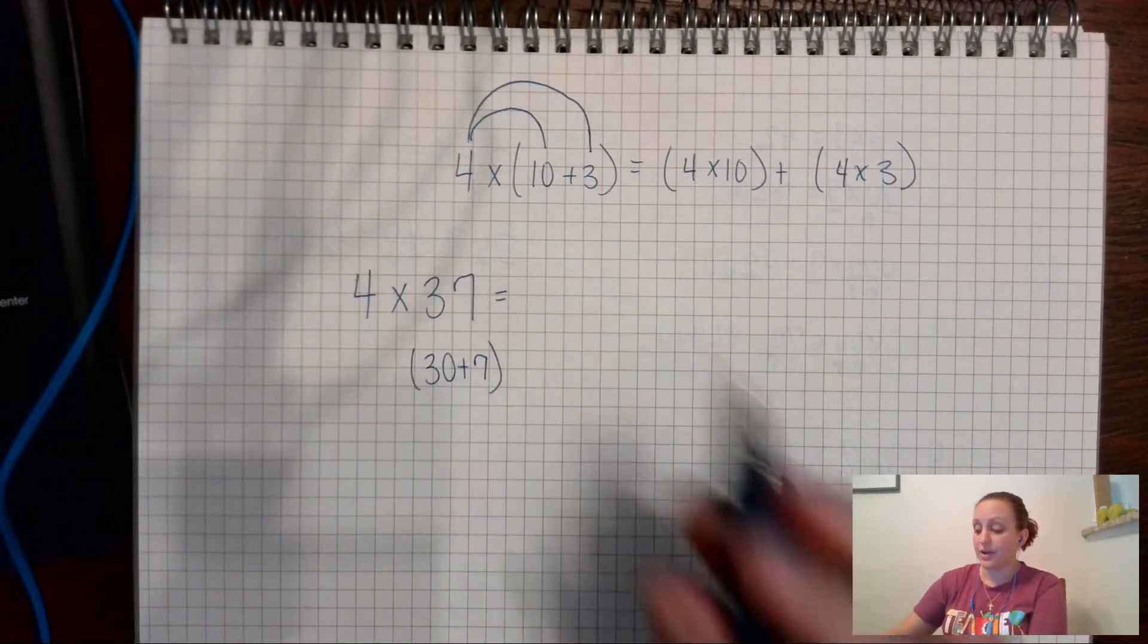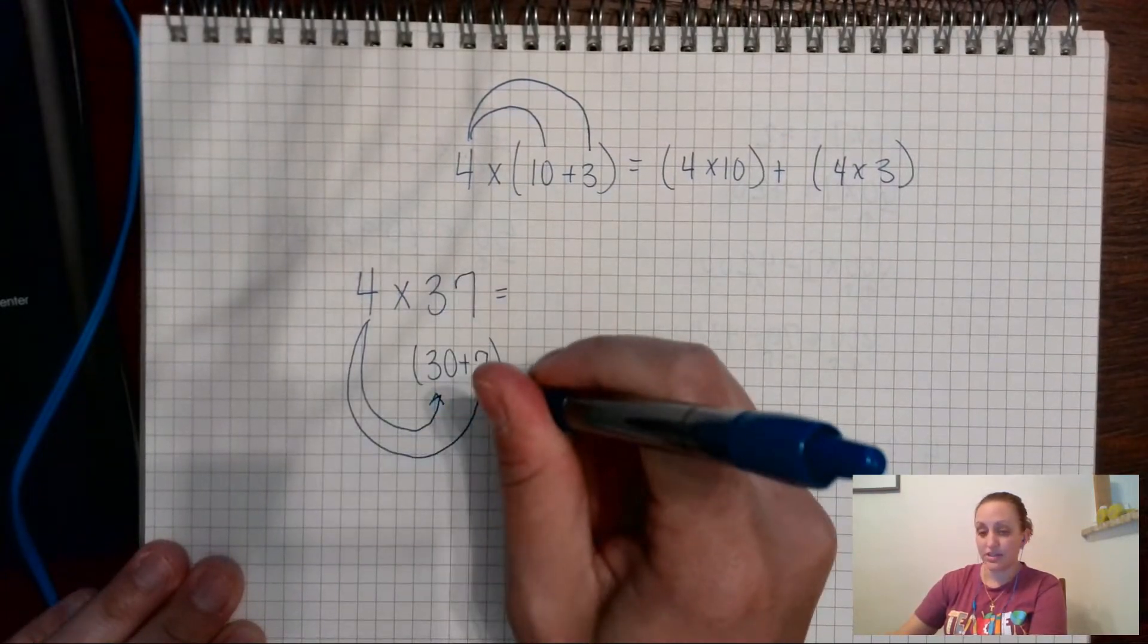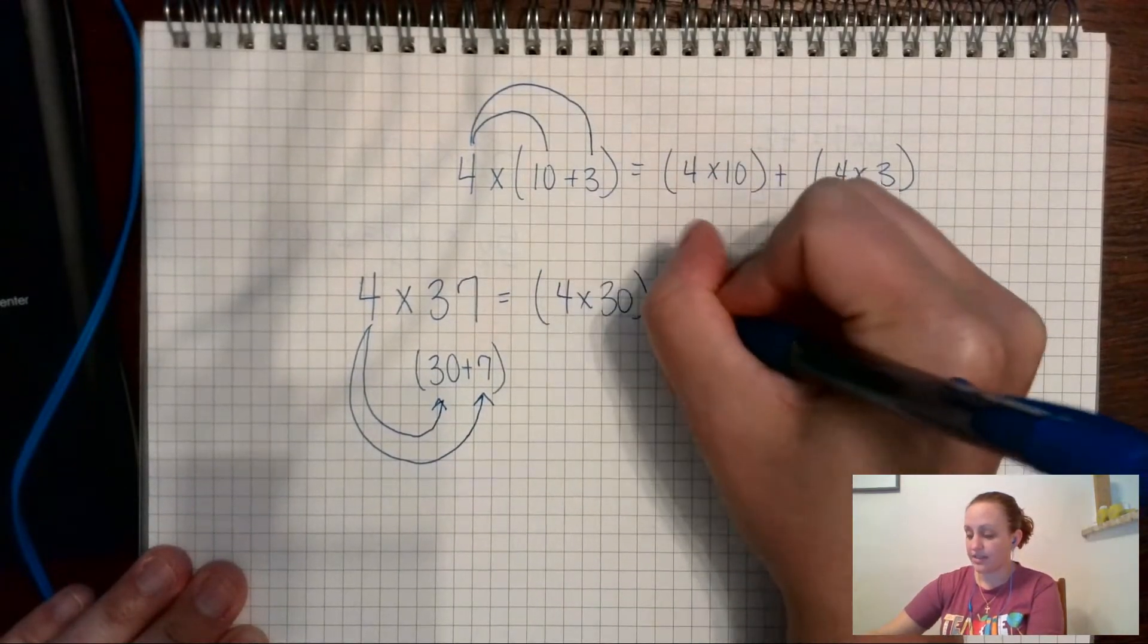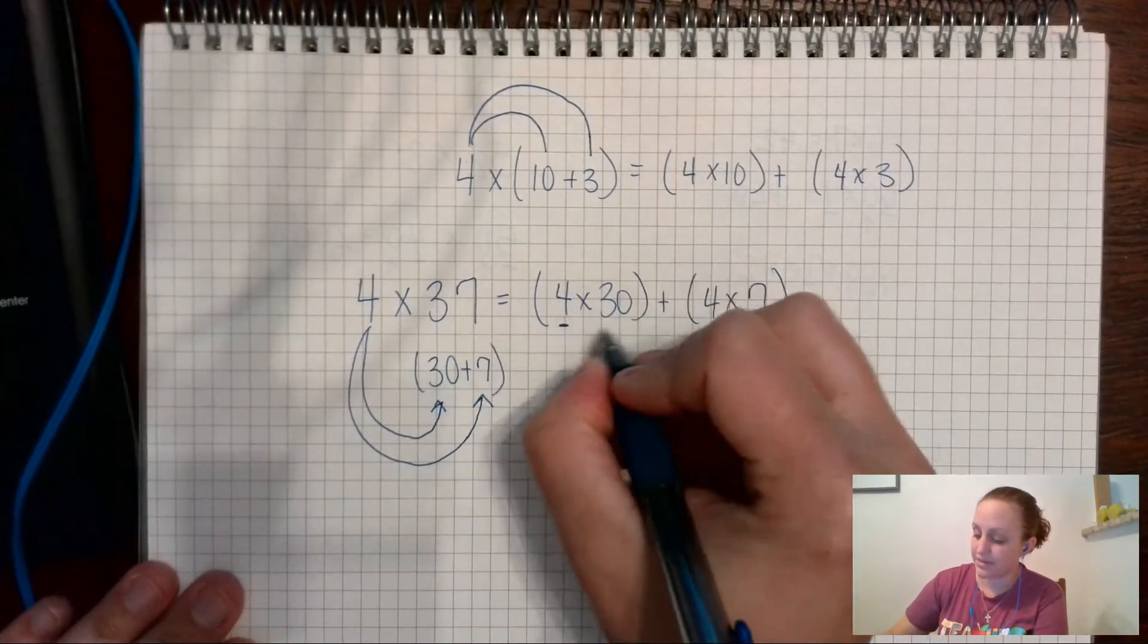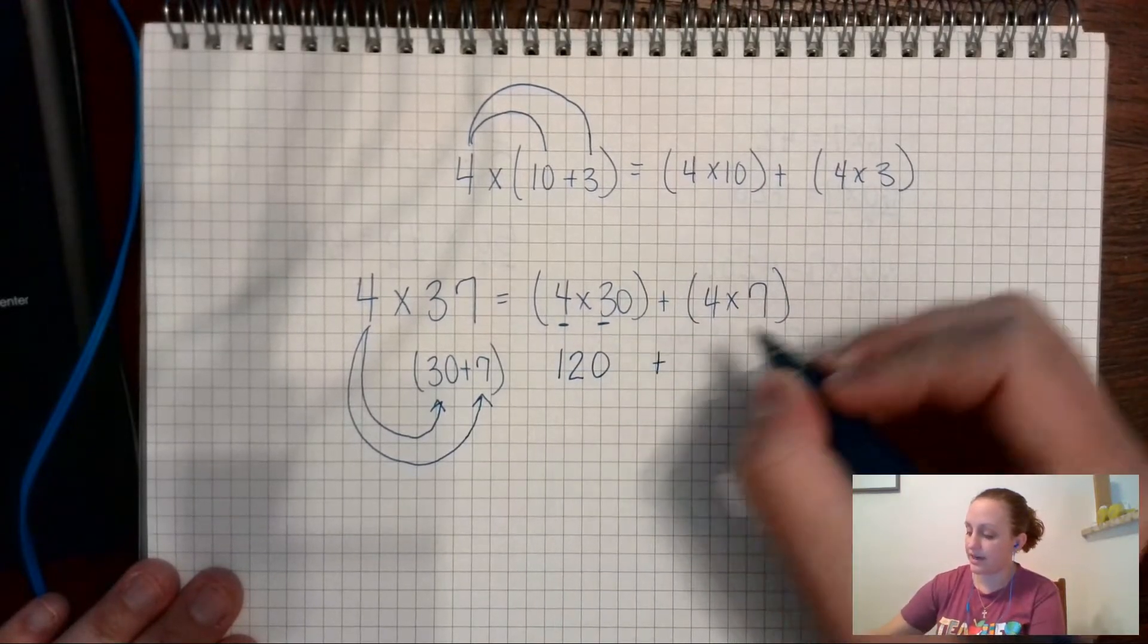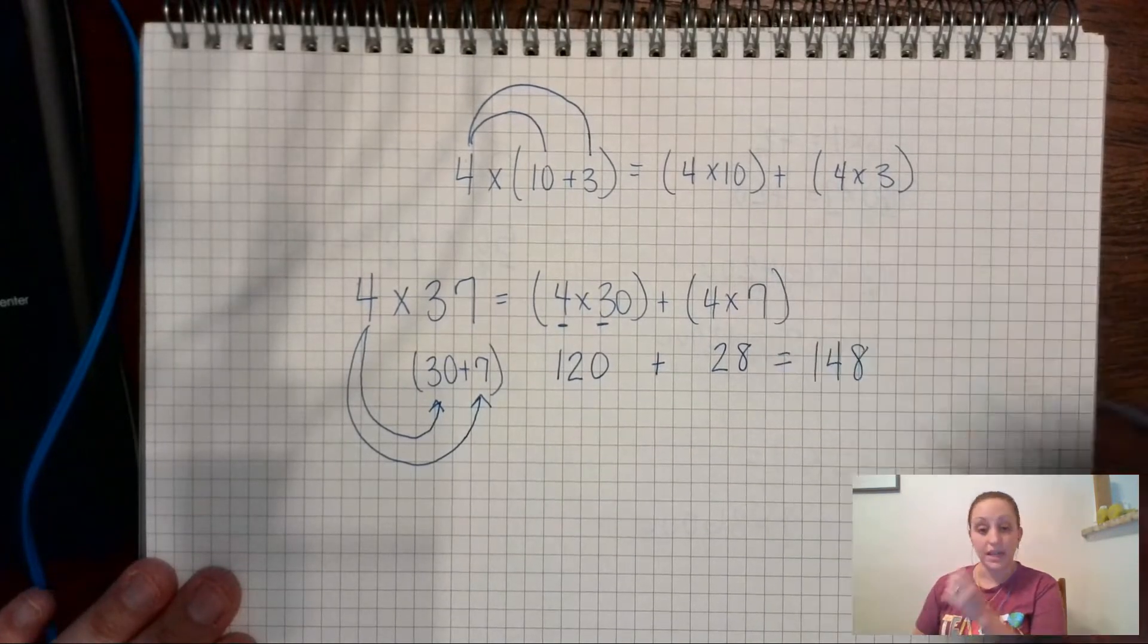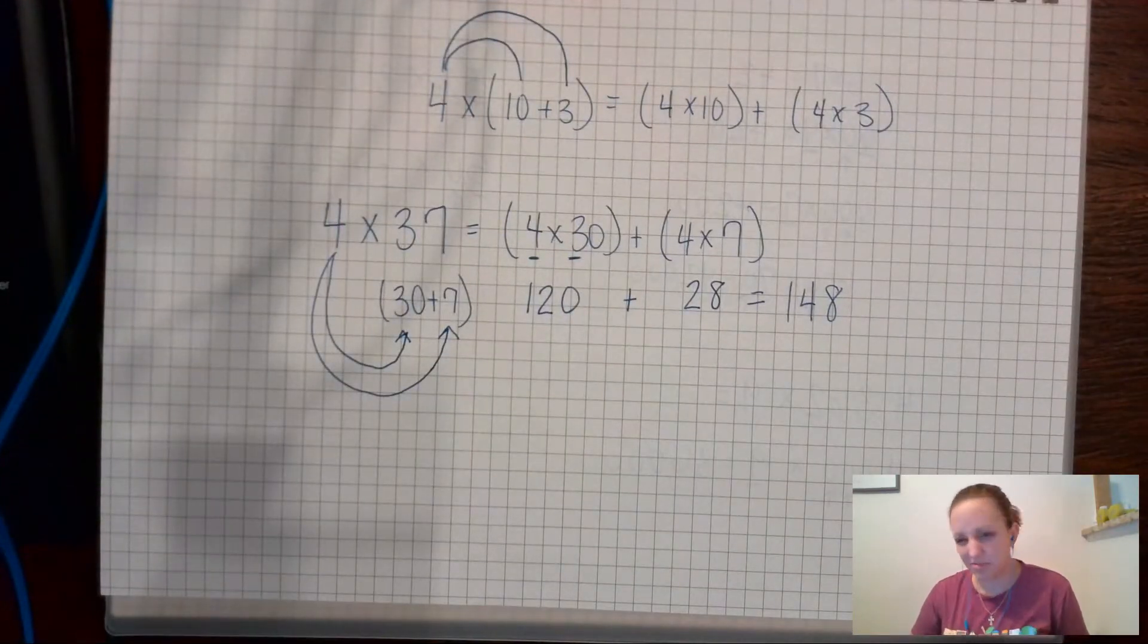So now I have to distribute my 4 times to the 30 and to the 7. So I would have 4 times 30 plus 4 times 7. Well, front end multiplication, 3 times 4 is 12 plus a 0, and then I'm going to add 28 because 4 times 7 is 28. So that would be 148, and that's kind of a good mental math or quick math strategy that you can use to do that.